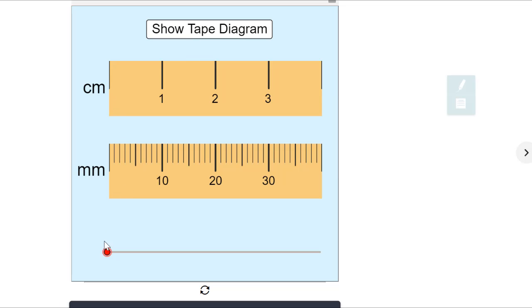I'm here at zero. I'm going to move over to one centimeter. When I do that, I get 10 millimeters are highlighted.